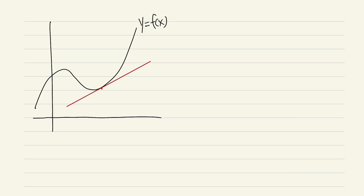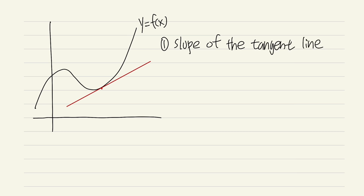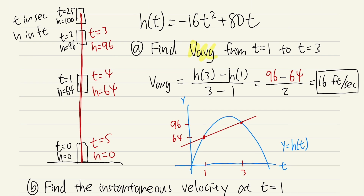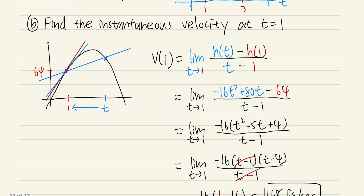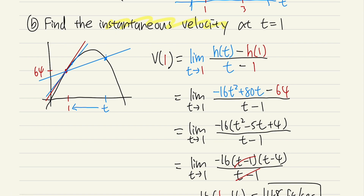In this calculus lesson I'm going to answer the biggest question of Calc 1: how do we find the slope of the tangent line. One application we did last time was finding average velocity — that's just the slope between two points. And if you want to find the instantaneous velocity, that's the slope at one point on the curve, which is the slope of the tangent line.